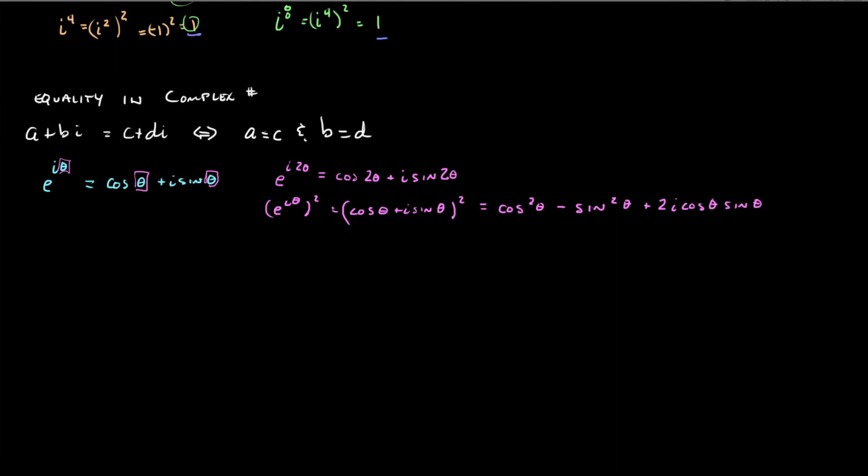Now, keep in mind the way, what I told you before as far as equality. This is the real component. This is the real component. So, cosine of 2 theta is equal to the cosine squared of the angle minus the sine squared of the angle.